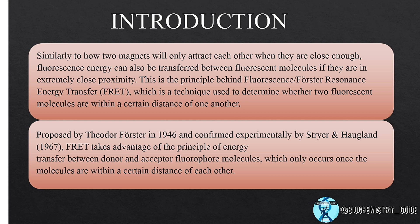This is the principle behind Fluorescence Forster Resonance Energy Transfer, which is a technique used to determine whether two fluorescent molecules are within a certain distance of one another. It was proposed by Theodore Forster in 1946 and confirmed experimentally by Stryer and Haugland in 1967.